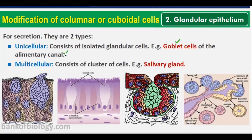Goblet cells secrete mucus into the alimentary canal, which helps digestion. Multicellular glandular epithelium consists of clusters of cells that form a gland and secrete together — for example, salivary glands. So glandular epithelium can be either unicellular or multicellular.